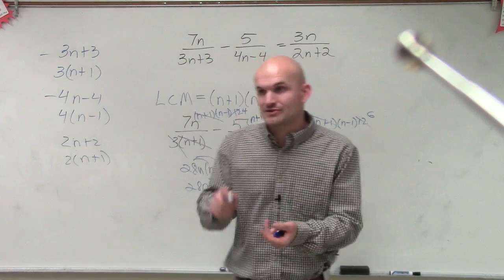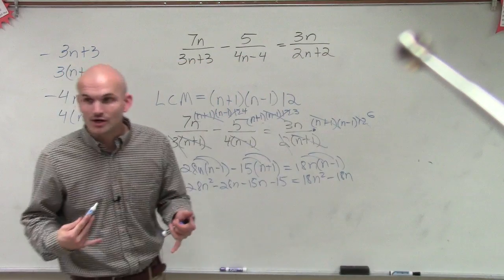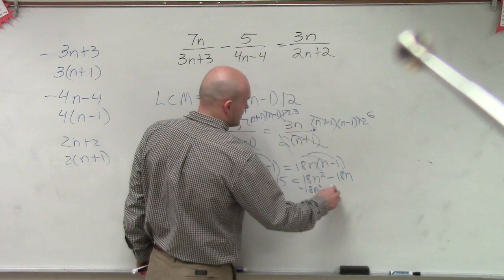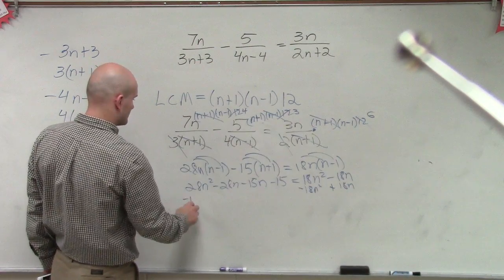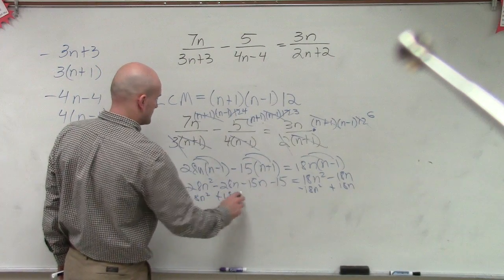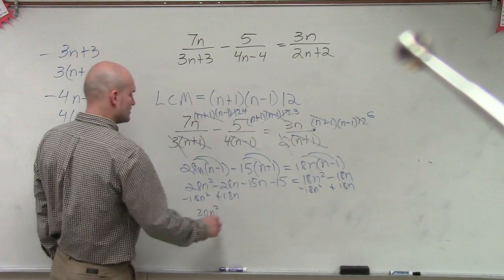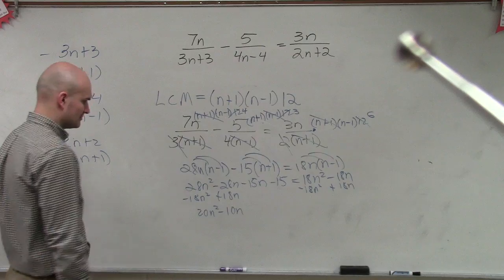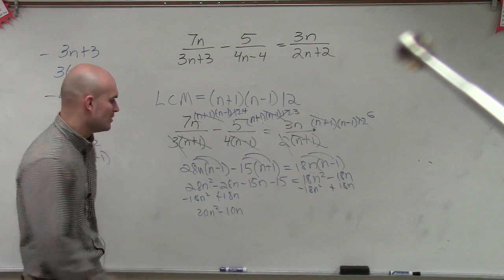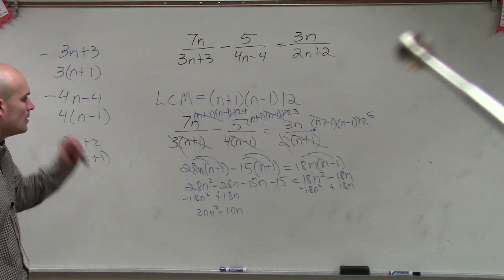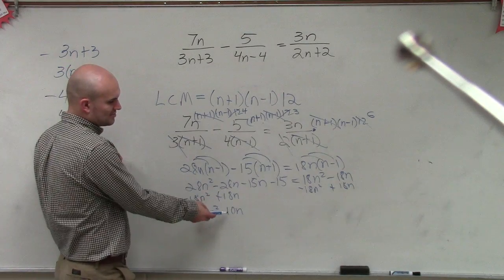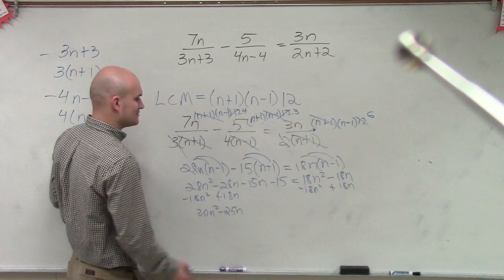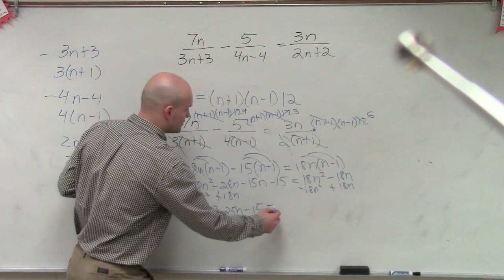And how do we know how to solve quadratics? Factoring, completing the square, quadratic formula, right? So to do all that, though, we have to set it equal to 0. So the first thing I need to do is get my 18n squared and my 18n to the other side. So therefore, I now have 10n squared minus 43n plus 15 equals 0.